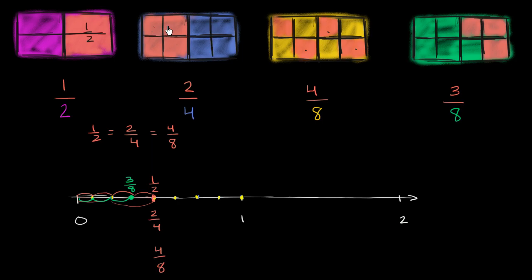Notice, I now have 1, 2, 3, 4 out of the eight equal squares shaded in. These two things are equal. So let me make it clear. This is an equal fraction, which is an equal fraction of that, which is an equal fraction of that.